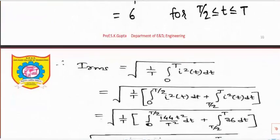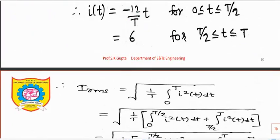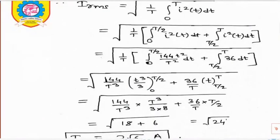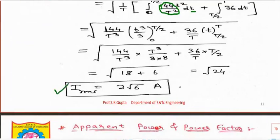Afterwards, solve the integration by splitting it: from 0 to T/2 using I(t) = −12/T × t, squaring gives 144t²/T². From T/2 to T it is 6, so 6² = 36. Taking 144/T² outside the integration and integrating t² gives t³/3; applying limits the T³ terms cancel. The second part: 36 × dt integrated from T/2 to T. Solving everything gives the final answer as 2√6.